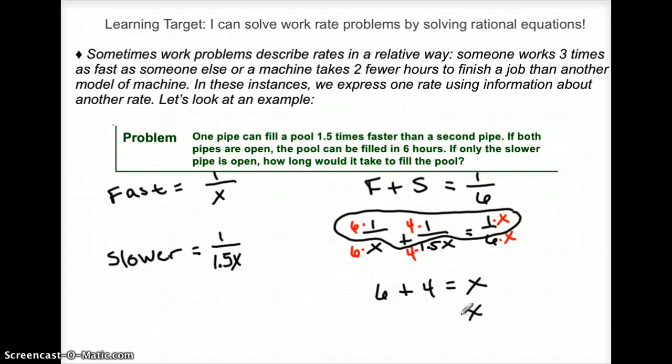So then x equals 10. But now I've got to go back to the question. Remember what x was. X was the time for the fast pipe. Is that what they asked me for?